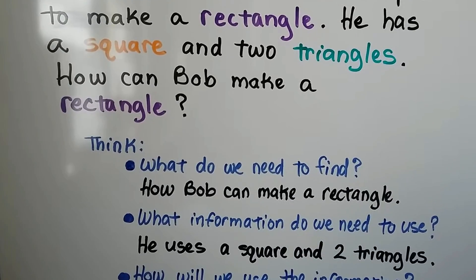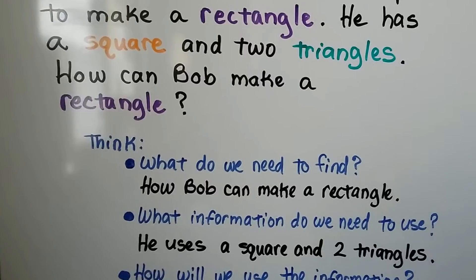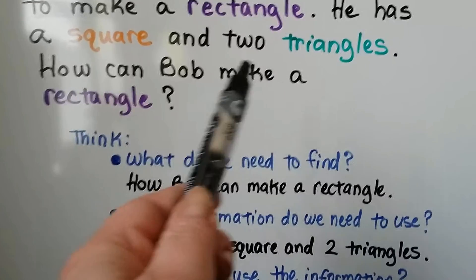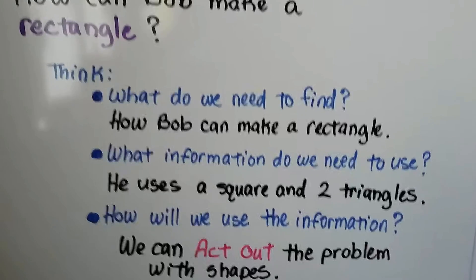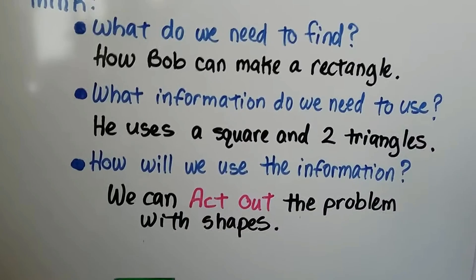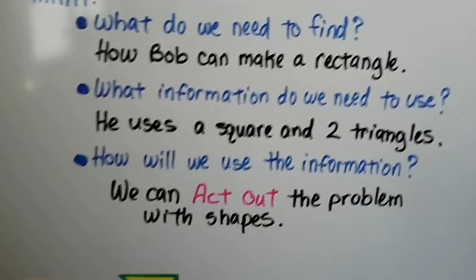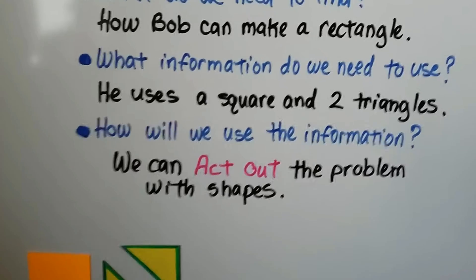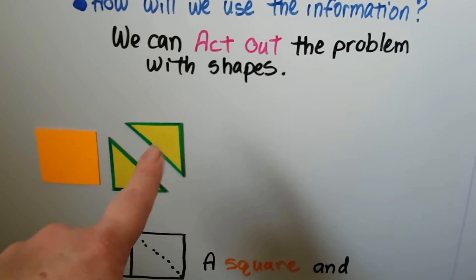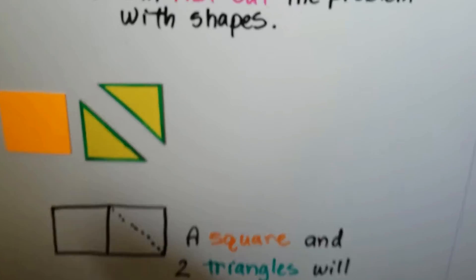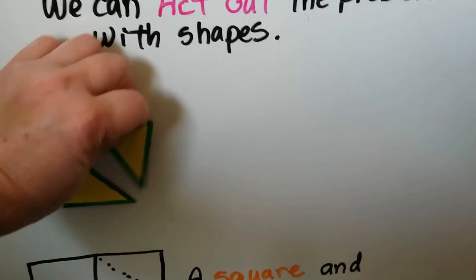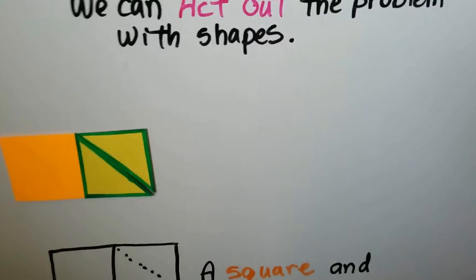What information do we need to use? Bob has a square and two triangles. How will we use the information? We can act out the problem with shapes. We have a square and two triangles, and we can put them together and make a rectangle.